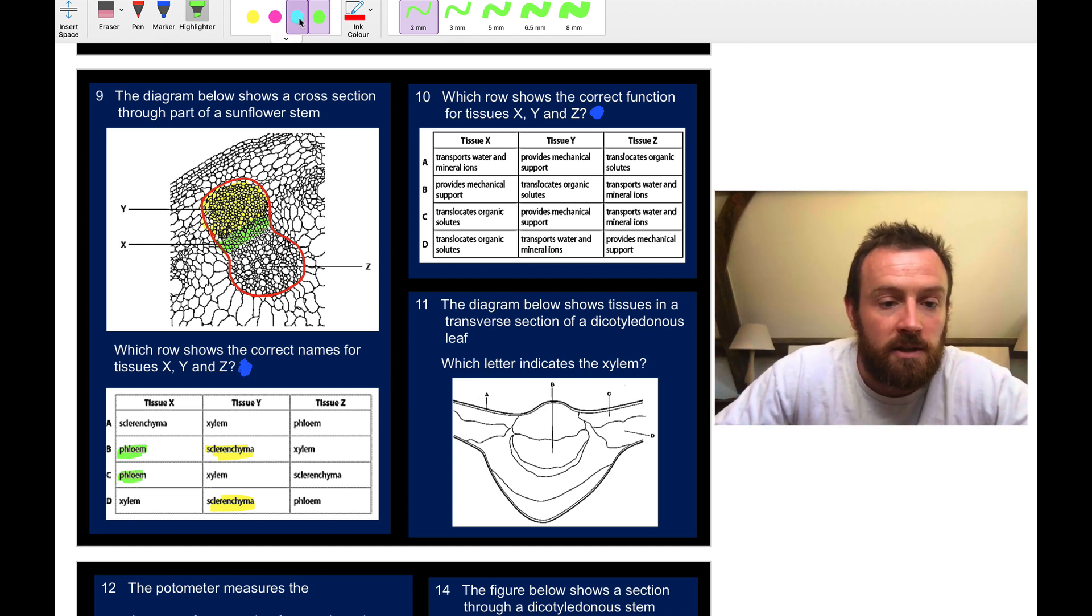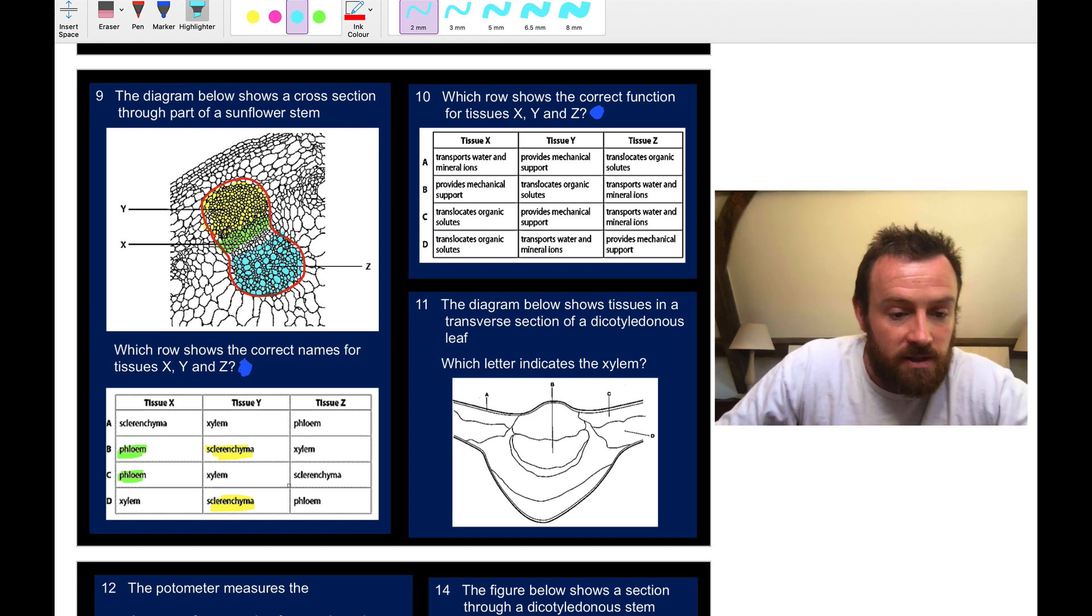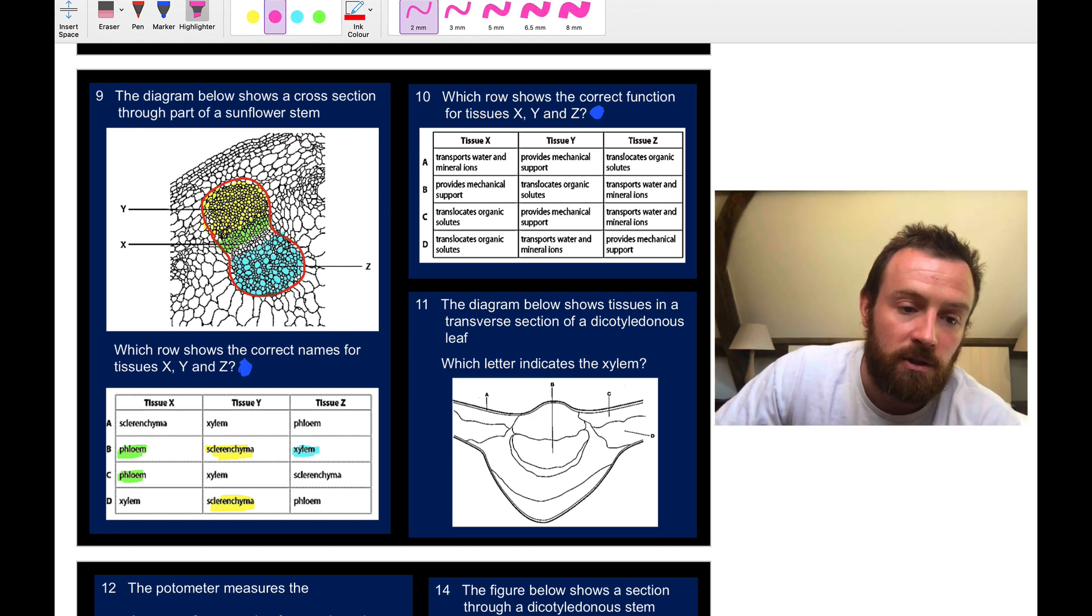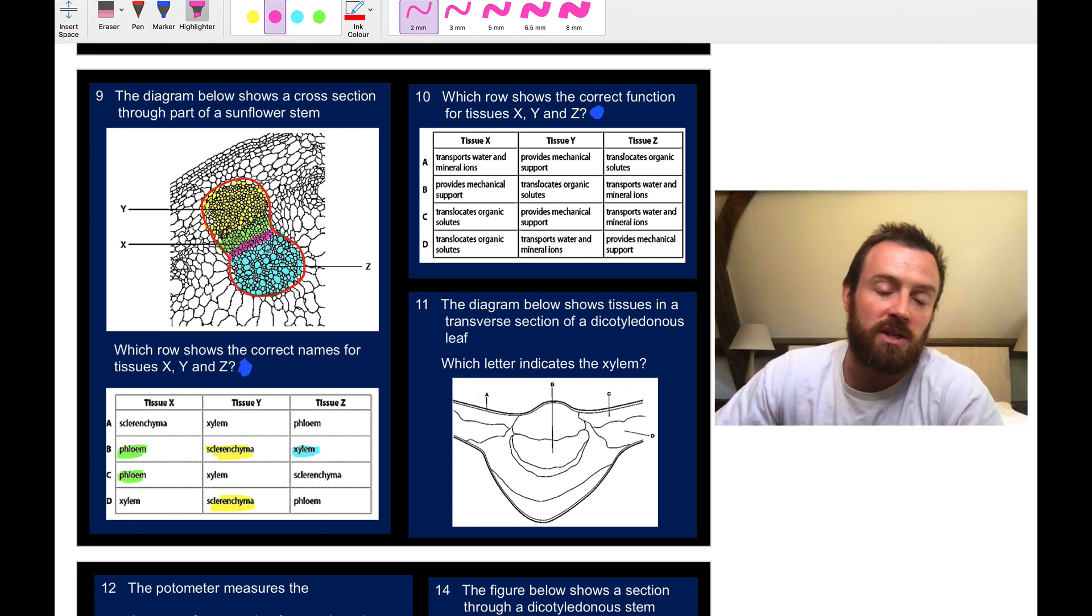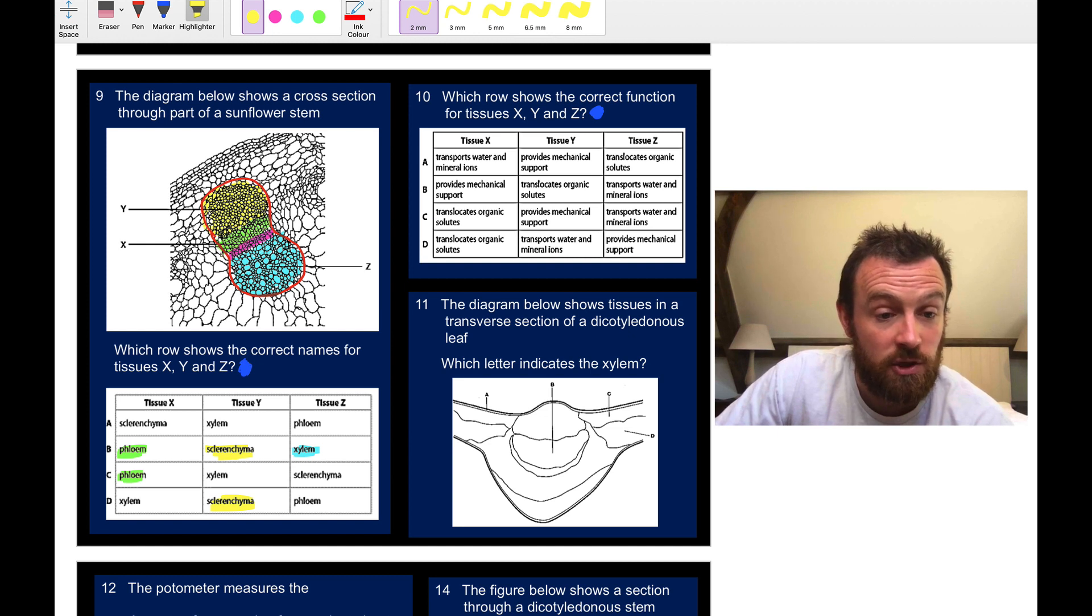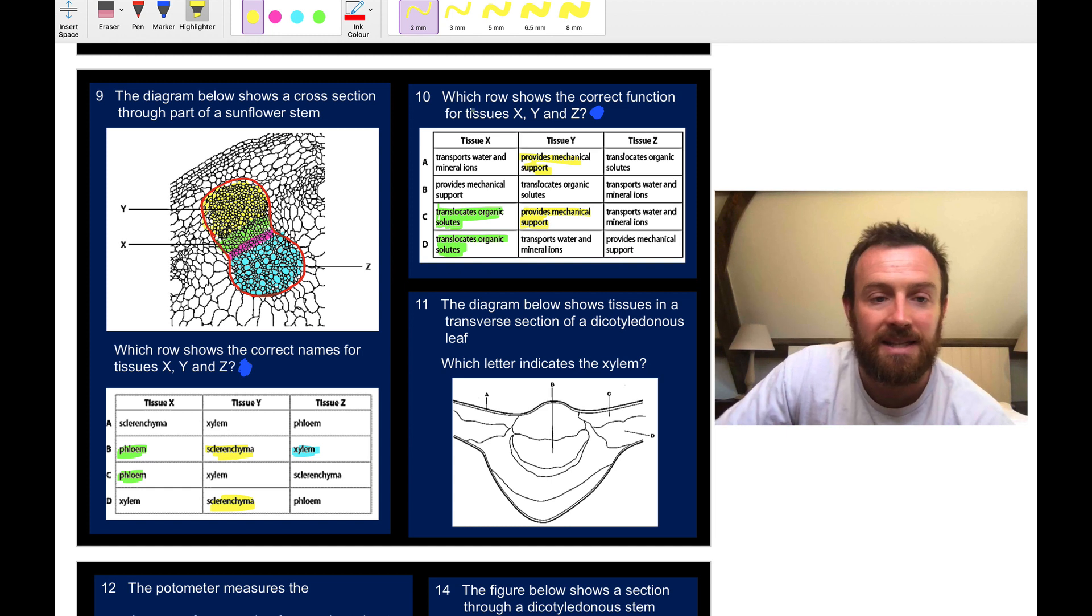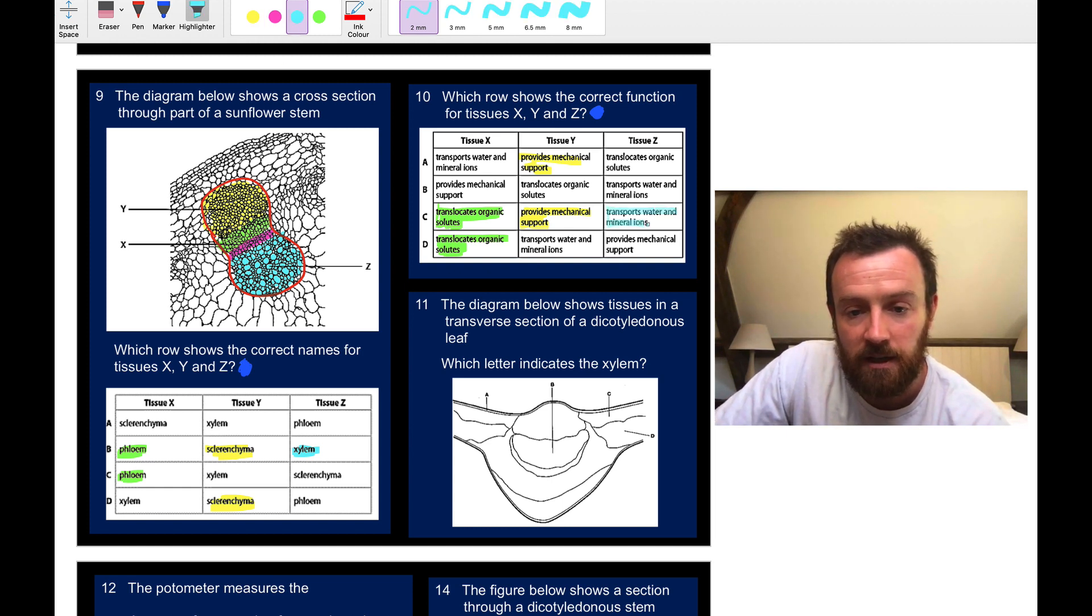Inside that is the phloem. I always color in the phloem green when I'm highlighting because it reminds me that it's carrying sugar made from photosynthesis. So X is the phloem. The xylem is in blue, I color it in blue because it's carrying water and mineral ions from the roots. You might have said well what's this here? There is something in there called the cambium which contains meristem cells which can divide. Which row shows the correct function for tissues X, Y, and Z? X is the phloem, so it transports organic solutes like sugar. Tissue Y is sclerenchyma, it's to do with mechanical support. Z is the xylem, and that's water and mineral ions. So the answer is definitely C.